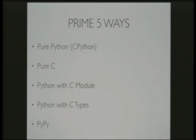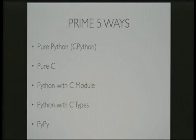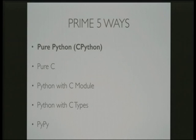The five ways I'm going to implement the algorithm are: purely in Python, then purely in C, in C integrated with Python via a C module, in C integrated with Python via ctypes, and finally I'm going to run it under PyPy just to see how that compares. The pure Python version is going to run under CPython, which is the standard Python implementation you've heard about, available for every different OS out there — except maybe Windows.